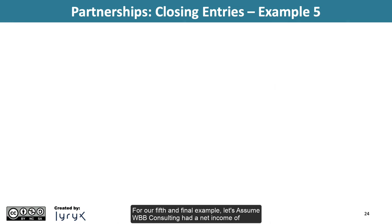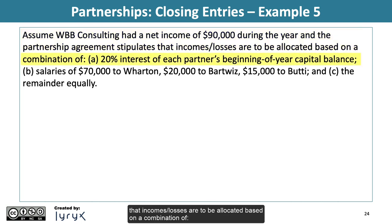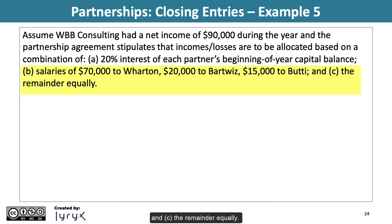For our fifth and final example, assume WBB Consulting had a net income of $90,000 during the year and the partnership agreement stipulates that income/losses are to be allocated based on a combination of: (a) 20% interest on each partner's beginning-of-year capital balance, (b) salaries of $70,000 to Wharton, $20,000 to Bartwiz, and $15,000 to Beauty, and (c) the remainder equally.